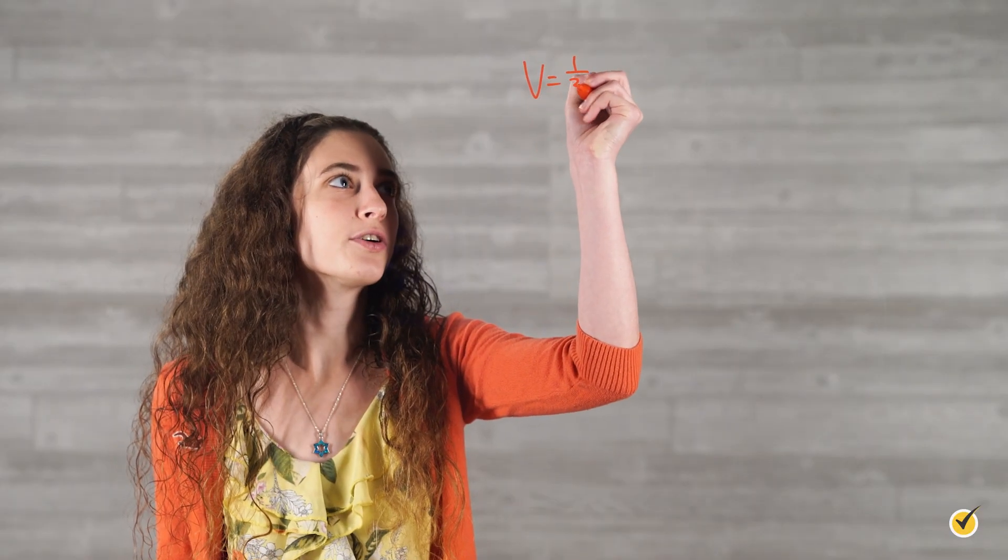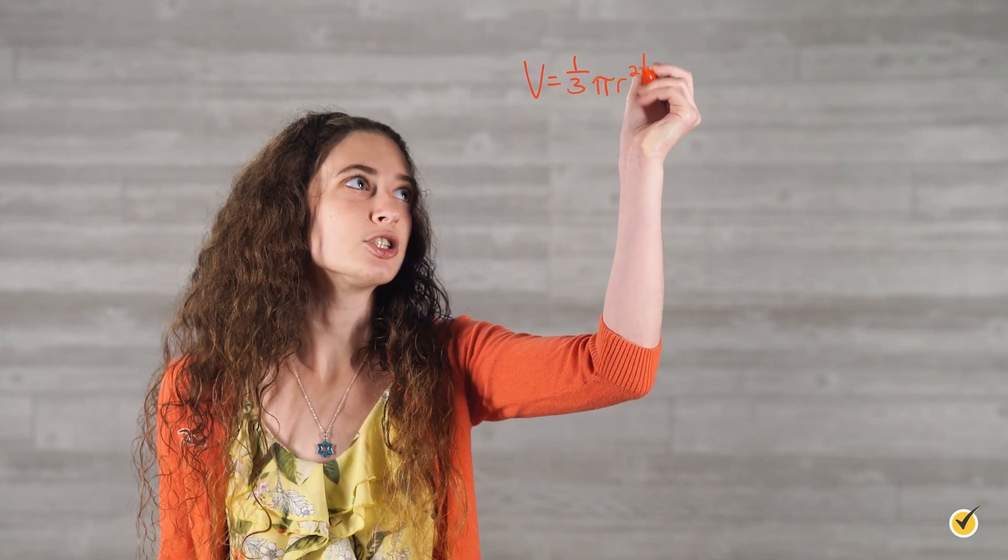In the case of a cone, our volume formula looks like this: Volume equals one-third pi r squared h.